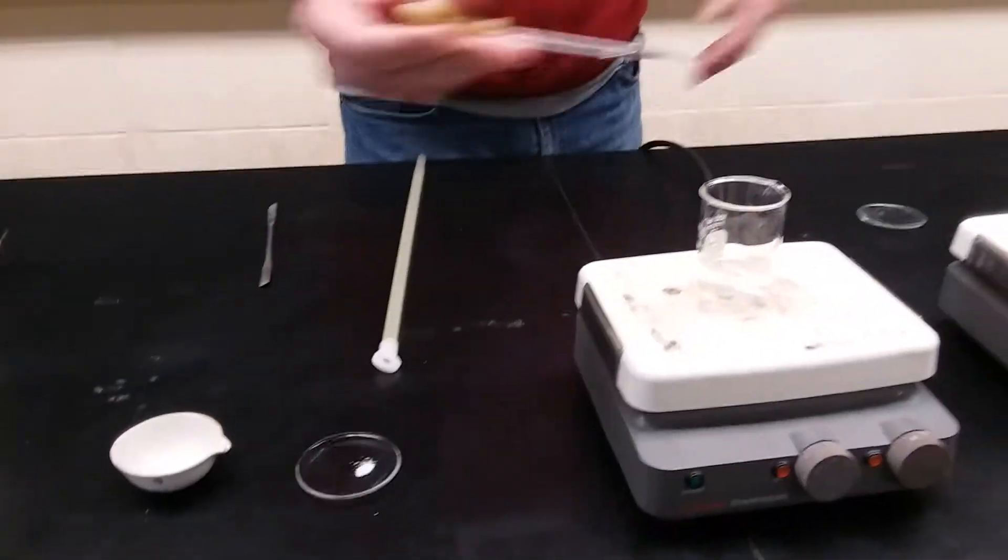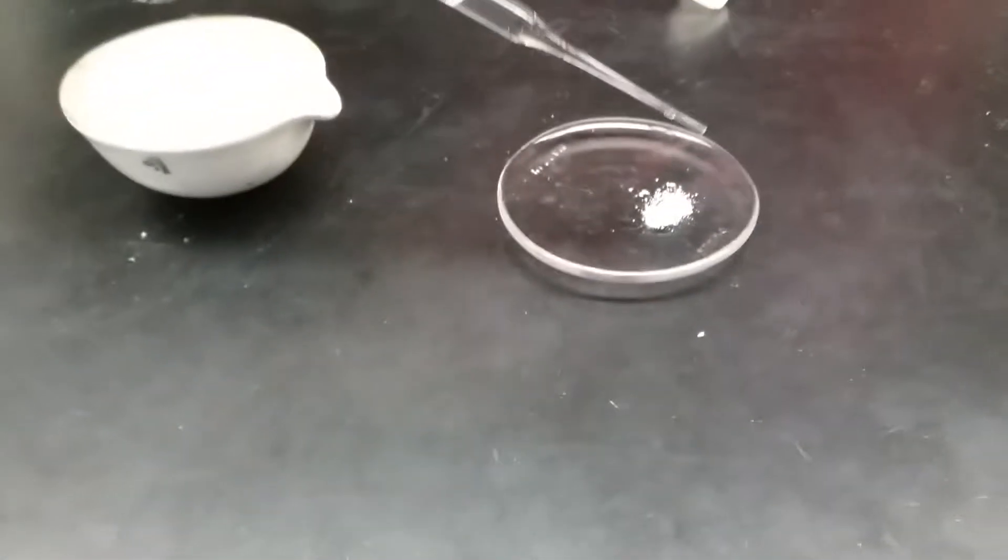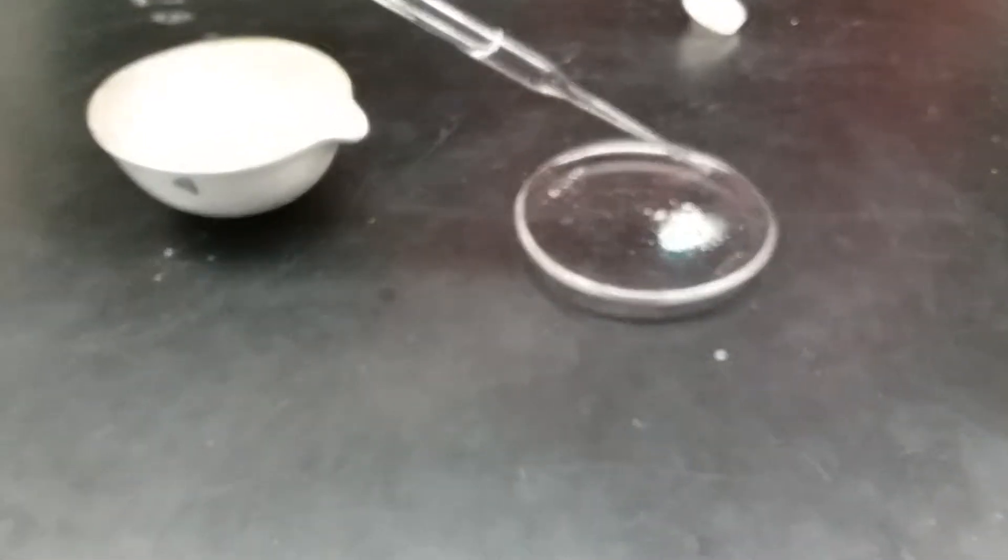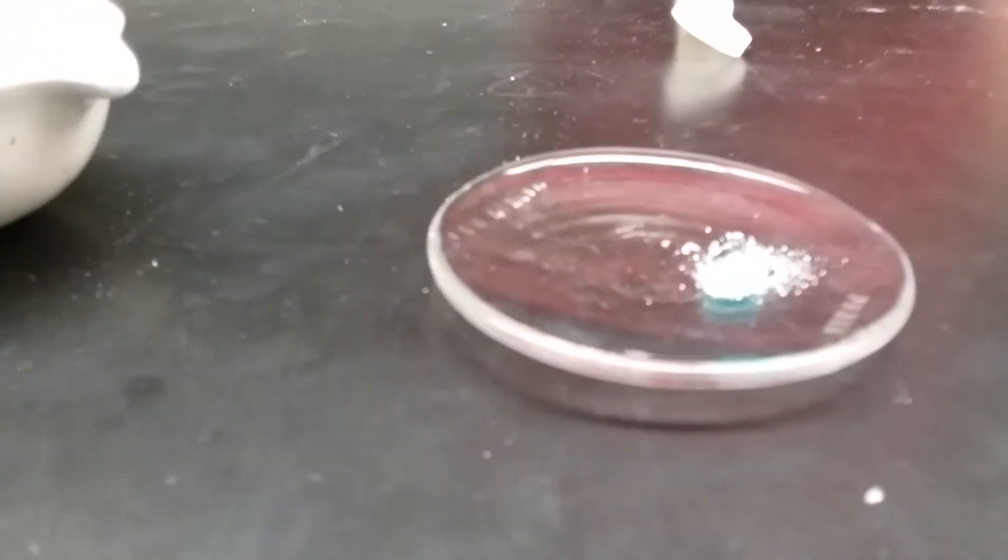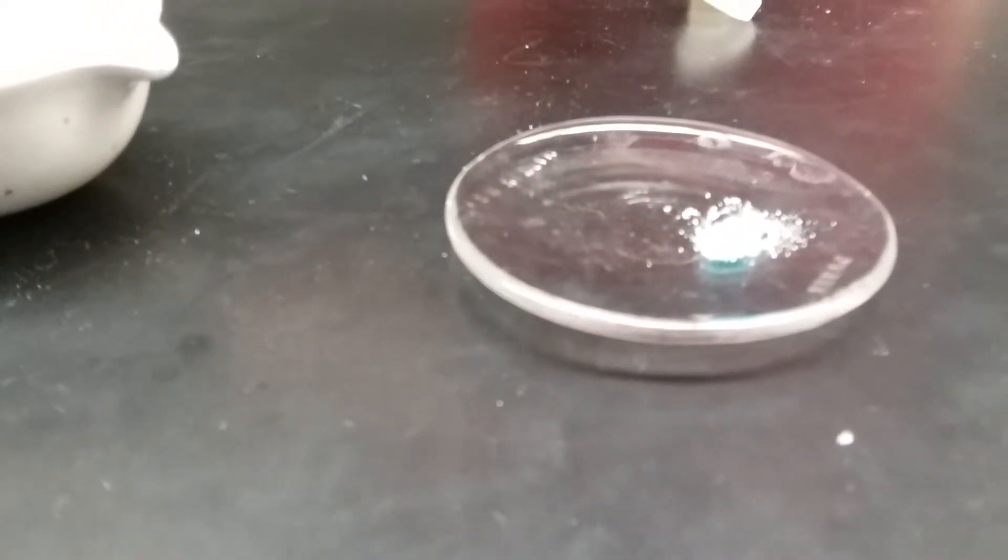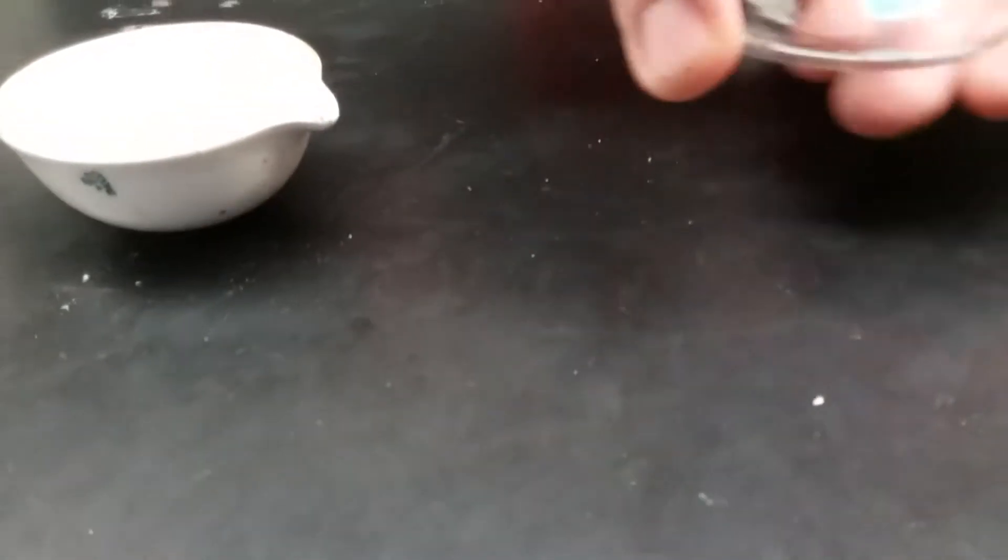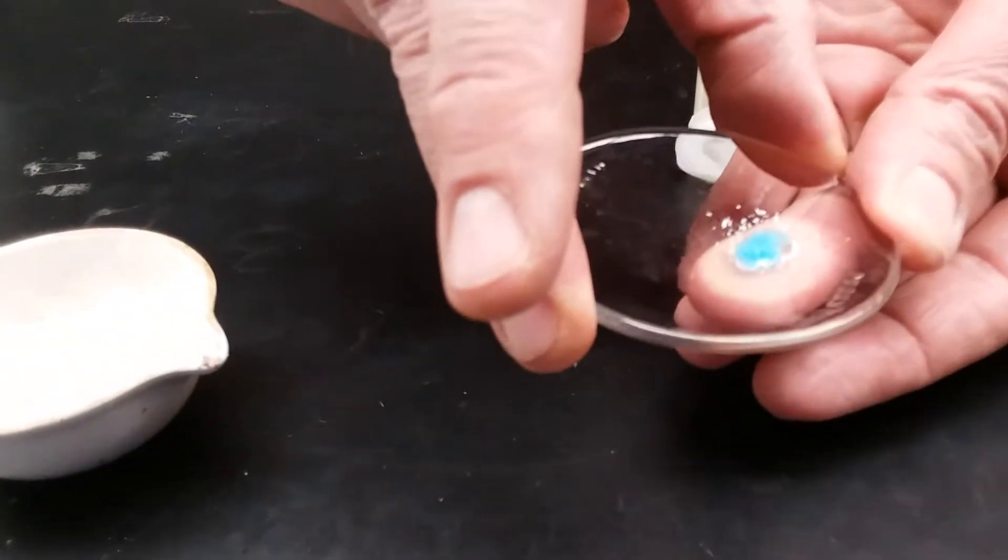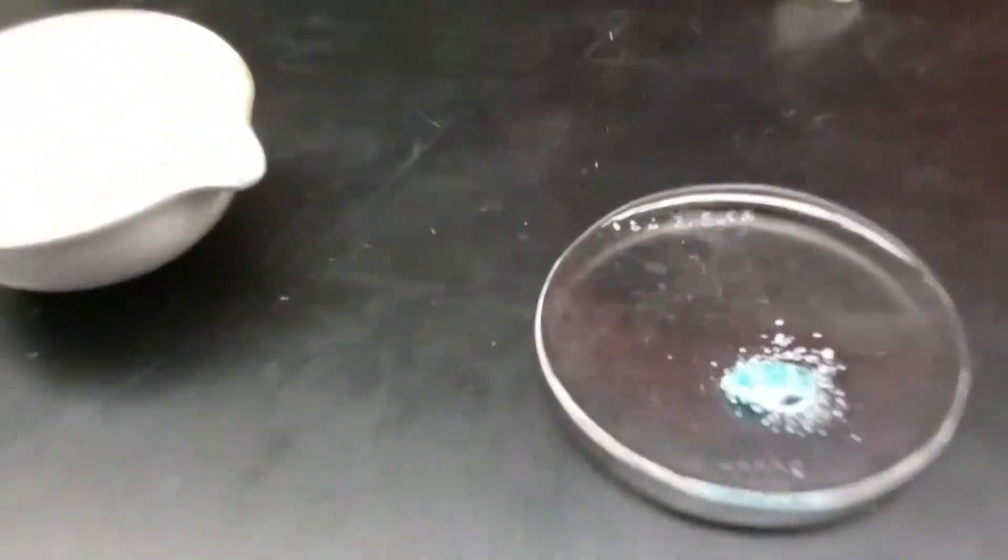This is just deionized water in these two beakers, and look what happens. A little steam is given off because this is an exothermic reaction. It was endothermic to drive the water away because I had to heat it. So the reverse should be exothermic, and it's actually a little bit warm underneath the watch glass there. The thing is, when you put the water in there, it makes it blue.